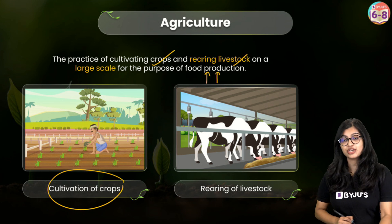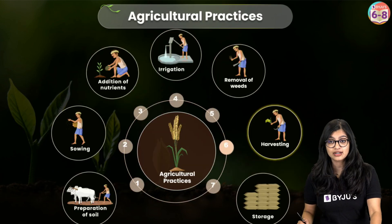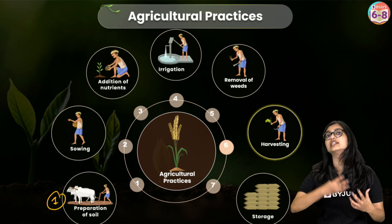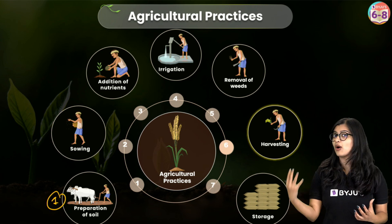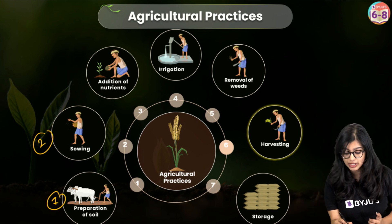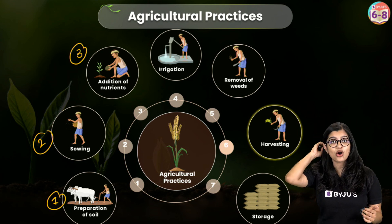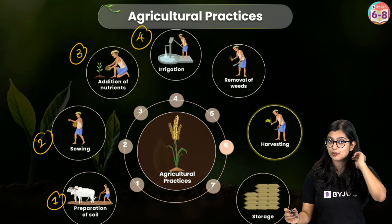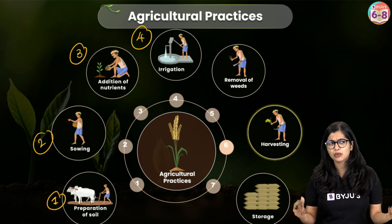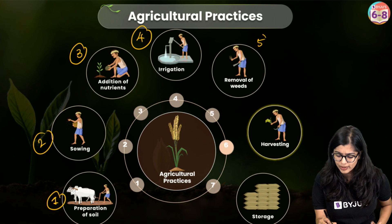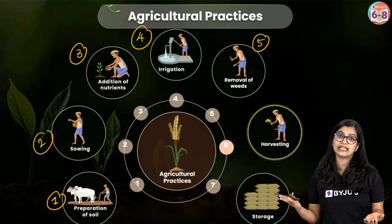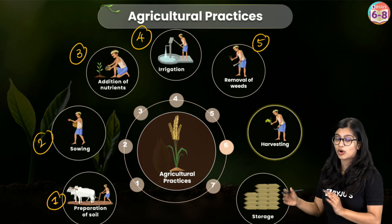When we talk about cultivation of crops, it's not a one-step process. There are various agricultural practices incorporated. Step one is to prepare the soil — loosen and turn it for proper aeration and nutrient mixing. Followed by sowing seeds in an equidistant manner. After which, if additional nutrients are needed, we add them as manure or fertilizers. The main step is to provide water through irrigation, allowing our crops to grow. Sometimes unwanted plants grow alongside and compete for nutrients, which can hamper crop yield.